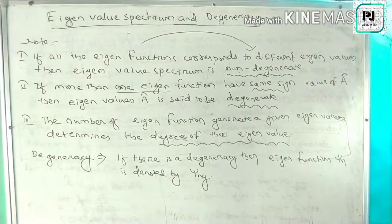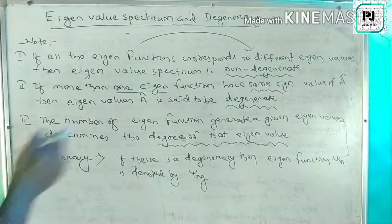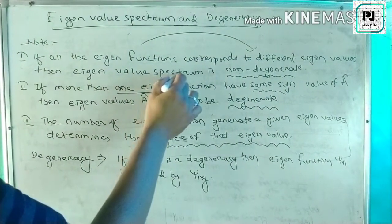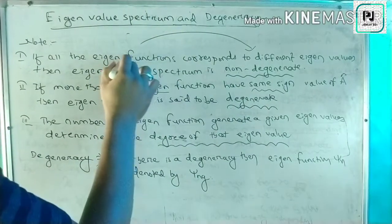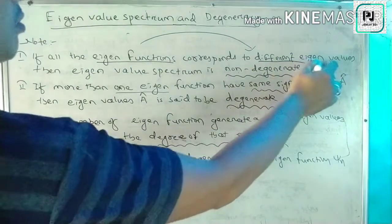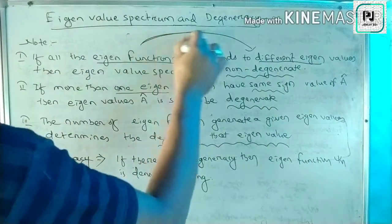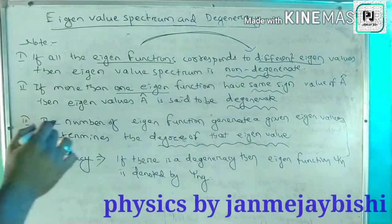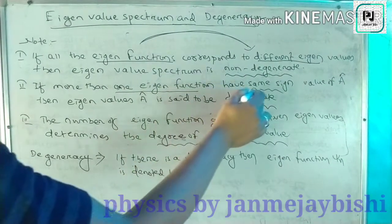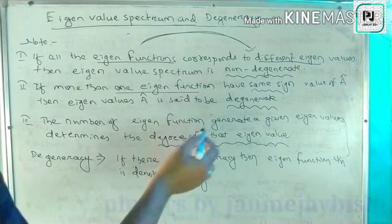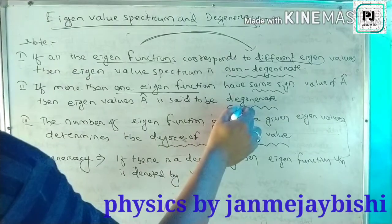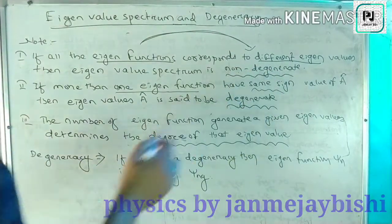If all the eigenvalue functions correspond to different eigenvalues, then the eigenvalue spectrum is non-degenerate — the eigenfunctions correspond to different eigenvalues. If more than one eigenfunction has the same eigenvalue A, then the eigenvalue A is said to be degenerate.